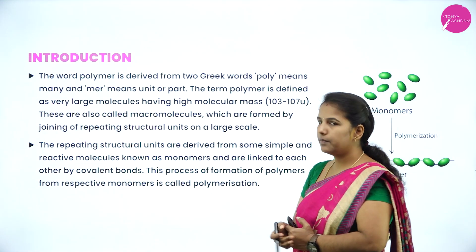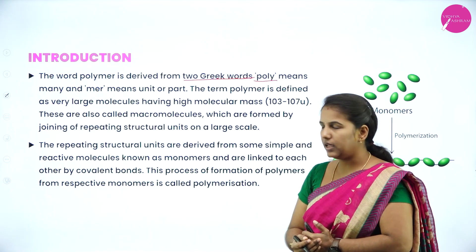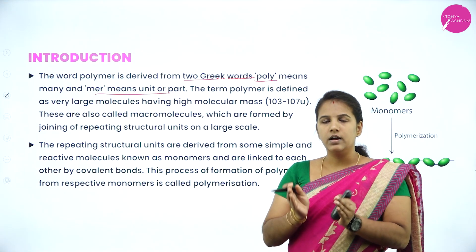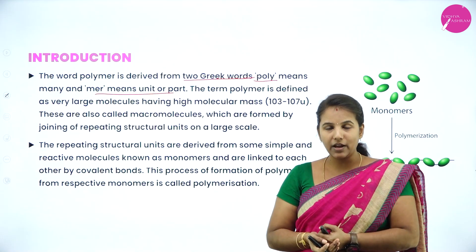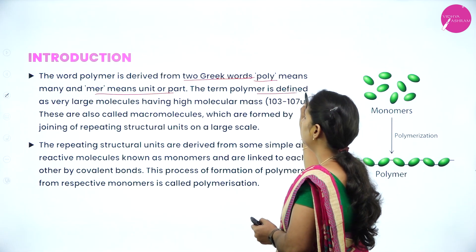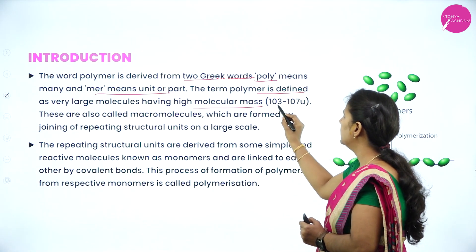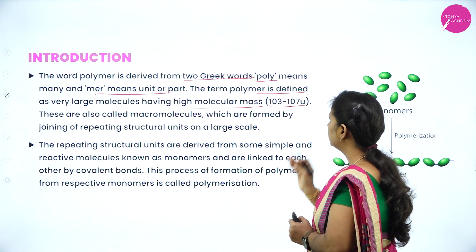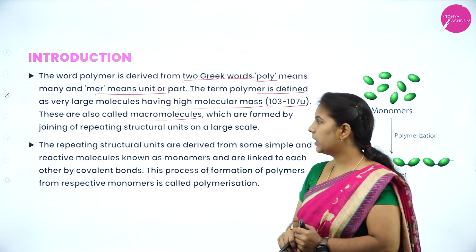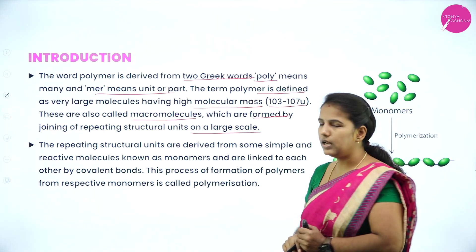As we already know, the word polymer has been derived from two Greek words: poly means many and mer means unit. When many units combine, they form a large macromolecule which we call a polymer. A polymer is defined as a very large molecule having a higher molecular mass — from 10³ to 10⁷ mu — and these are also called macromolecules, formed by joining repeated structural units on a large scale.